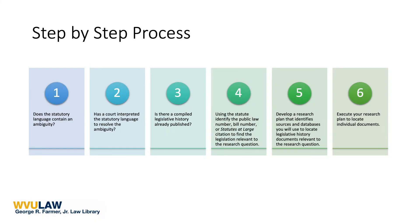Legislative history research, with all of its component parts, can feel like an overwhelming task to take on. This six-step process breaks down the path from an initial inquiry and research plan to executing searches for individual legislative history documents. This graphic depicts all six steps. Let's break down each one in further detail.